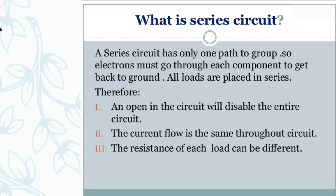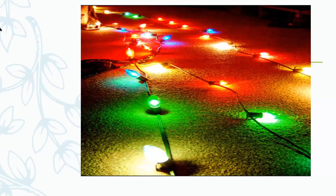Electrons must go through each component to get back to ground. This is an example of a series circuit. In real life, here we have lamps. These lamps are connected on the same wire, so the electrons or the current has only one flow path in the circuit.